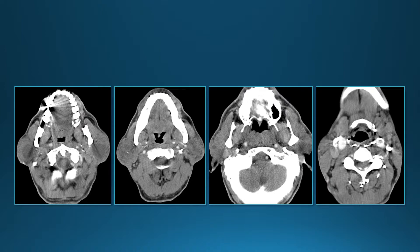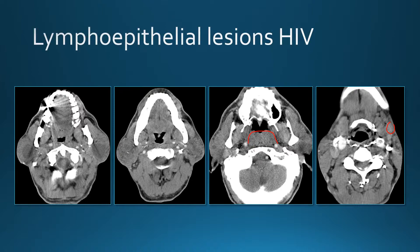Another patient has bilateral parotid space lesions that are cystic in both parotid spaces. This patient also has enlarged adenoids and some enlarged lymph nodes. This is a patient with HIV and these are lymphoepithelial lesions of the parotid.